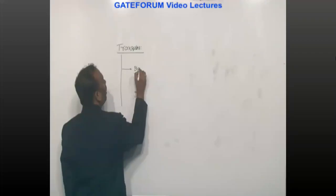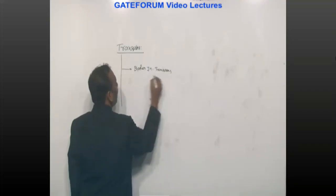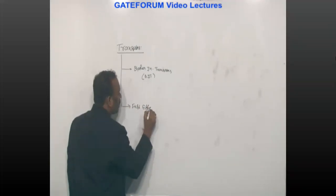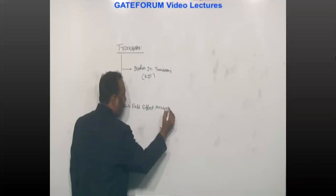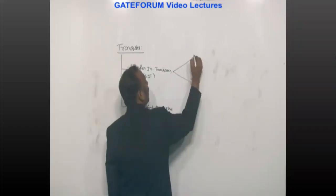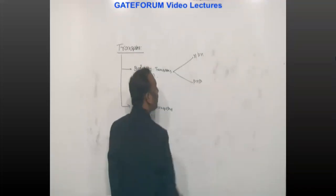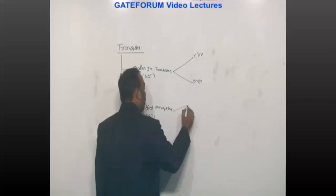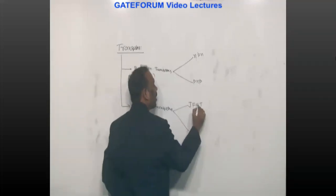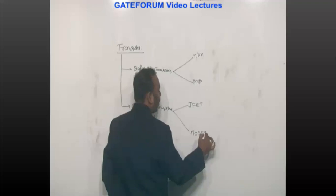Transistors are classified into two main types: bipolar junction transistors, called BJT, and field effect transistors, called FET. BJT is further classified into NPN and PNP transistors. FET is classified into junction field effect transistor (JFET) and metal oxide semiconductor field effect transistor (MOSFET).